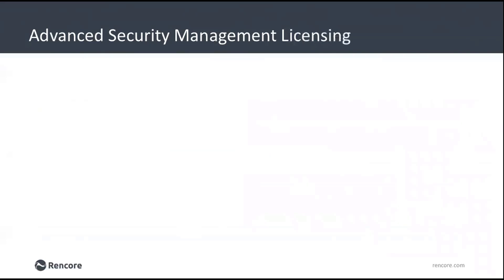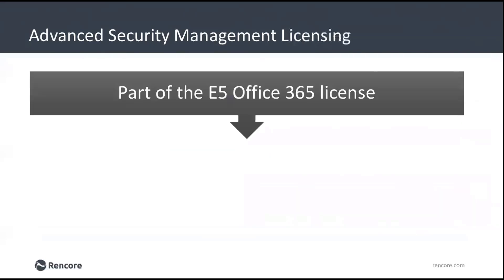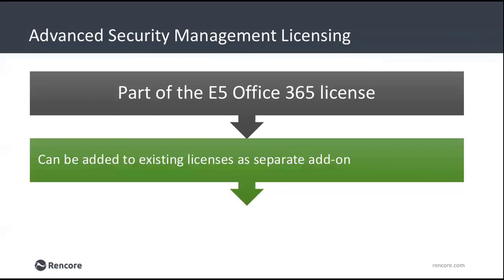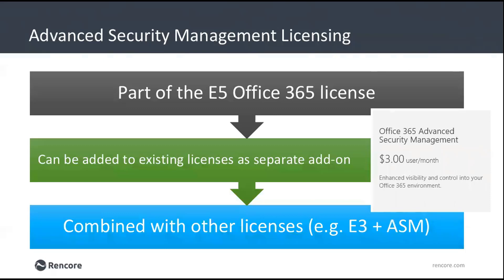From a licensing perspective, it's important to understand how we license Office 365 Advanced Security Management, referred to as ASM. It's part of the E5 Office 365 license by default. If you're not on E5, you can add it as a separate add-in — for example, E3 users can add ASM for $3 a user per month in the US. The key is that every single user in your organization needs to be licensed for ASM, even though end users don't directly see a benefit — it's more of an IT security function.